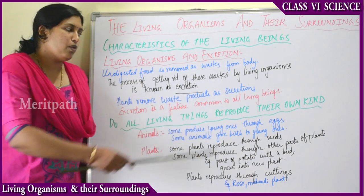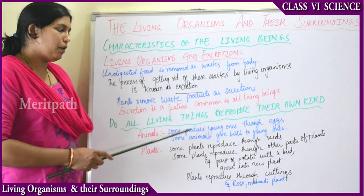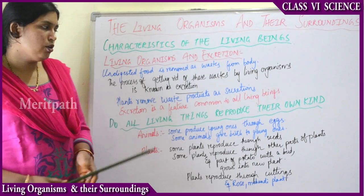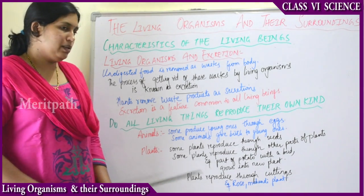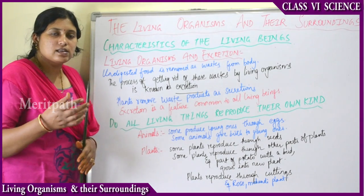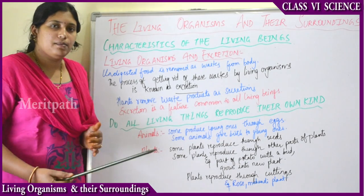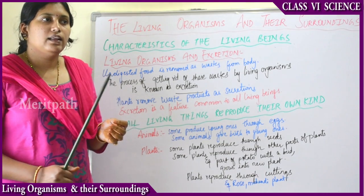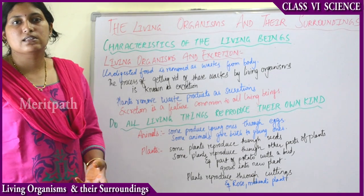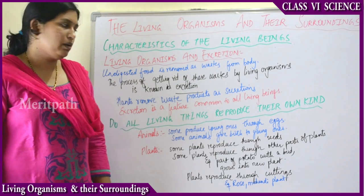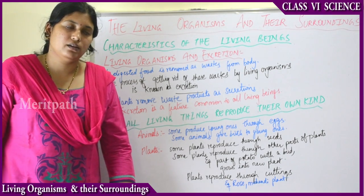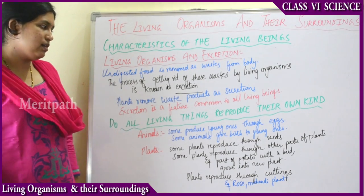Do all living beings reproduce their own kind? Reproduction is nothing but producing their young ones. Some animals give birth to young ones directly, while some animals give eggs — later those eggs hatch and become the animal. For example, crocodiles, turtles, hens, ducks, and quails all give eggs that hatch into new animals. That is how animals reproduce.